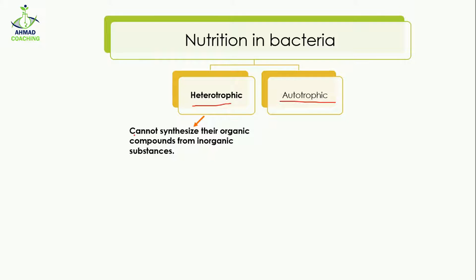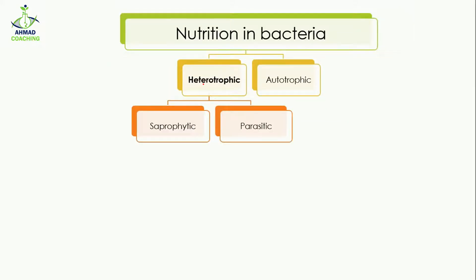Heterotrophic bacteria cannot synthesize their own organic compounds from inorganic substances. This means that heterotrophic bacteria are dependent on other organisms for their food — other organisms prepare the food, and the heterotrophic bacteria utilize it. There are two types of heterotrophic bacteria: saprophytic and parasitic.